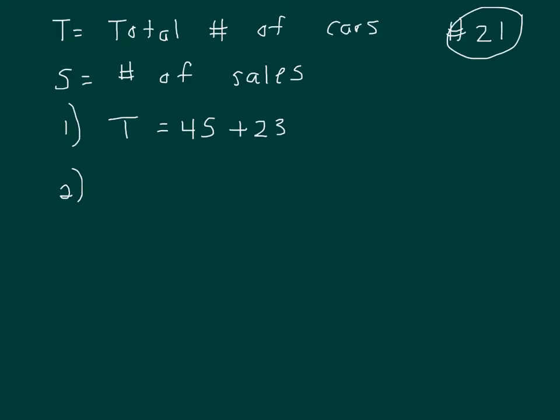Clue 2 says if each of the salespeople sells 6 cars, well that would be 6S cars, and you've got 5 left over. That would be your total number of cars. I don't like the variable S because a lot of times it looks like a 5. But once again, you can't solve for T.